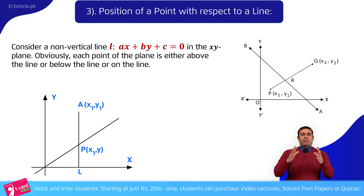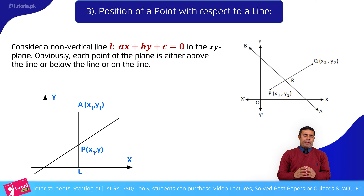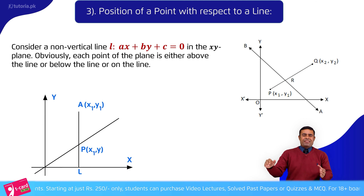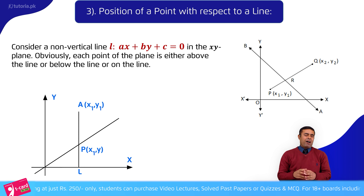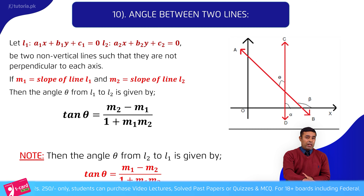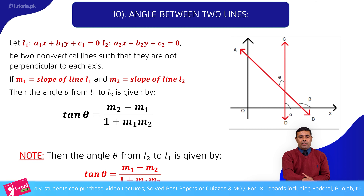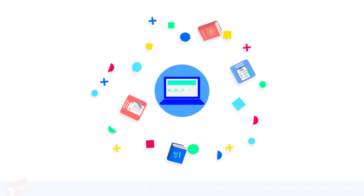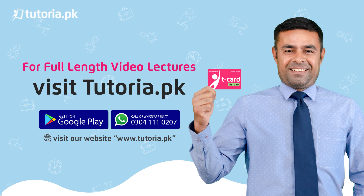Now we have a coordinate plane. We have X axis and Y axis. The formula is between two lines of angle. Here we go.